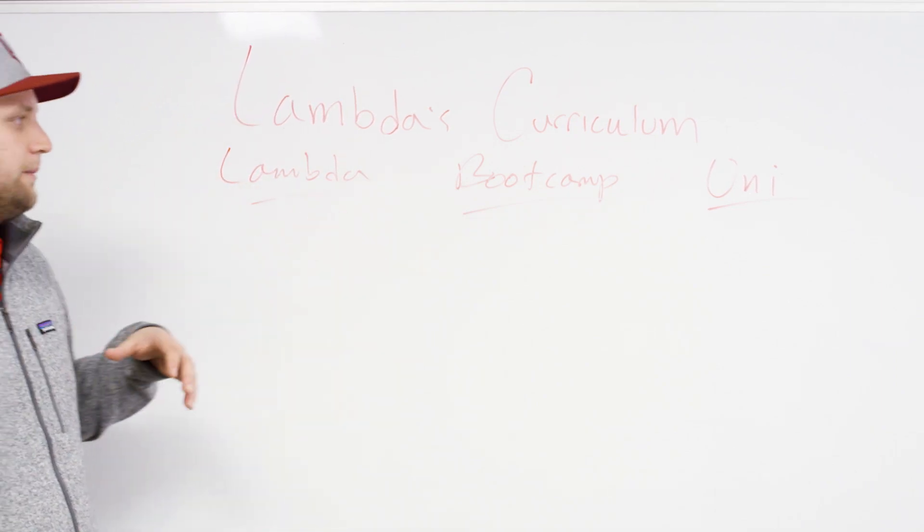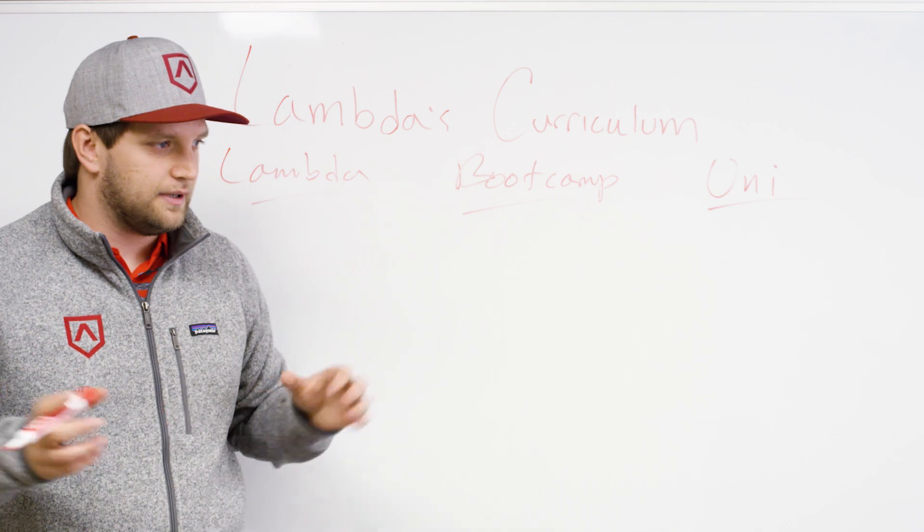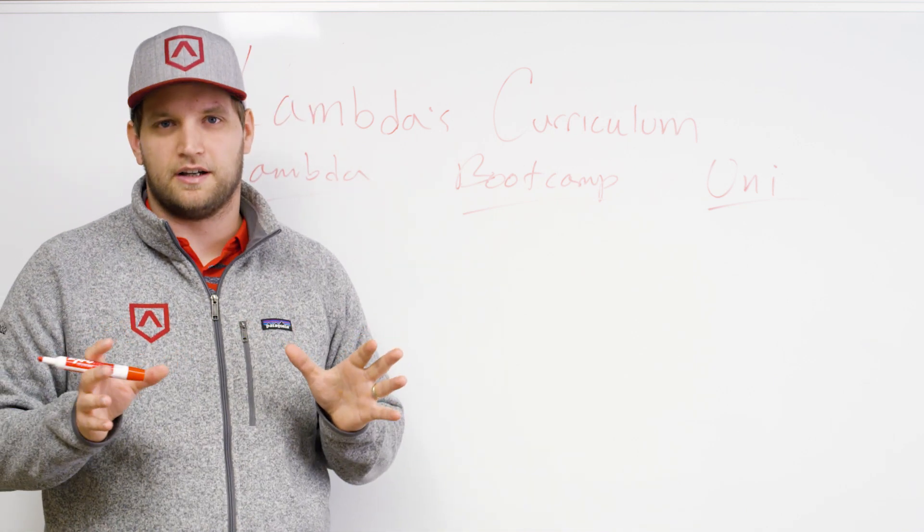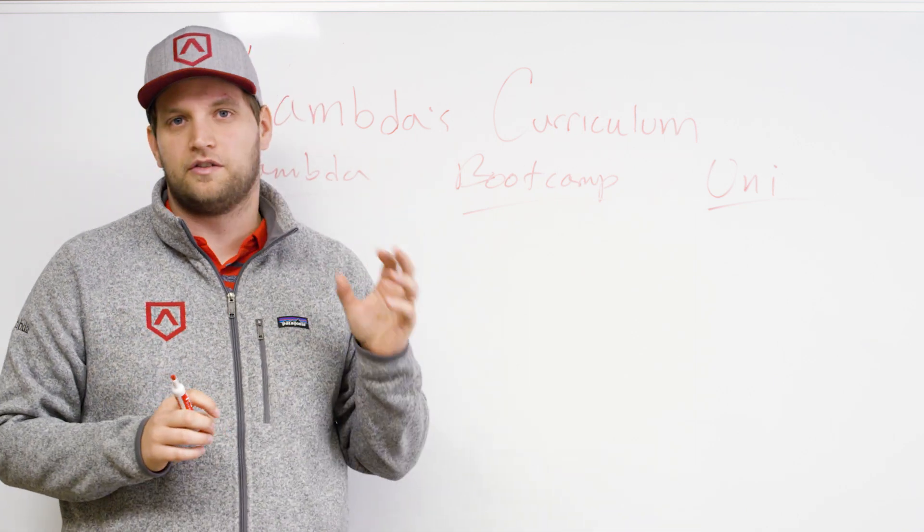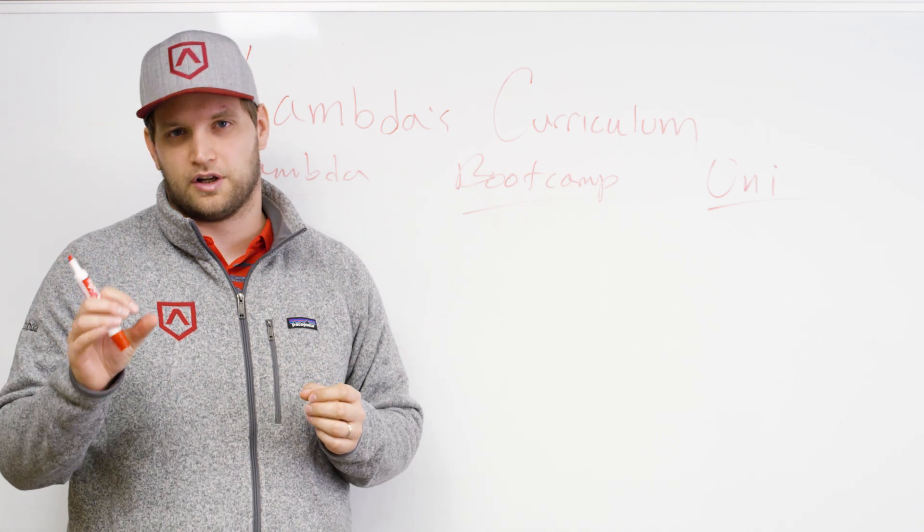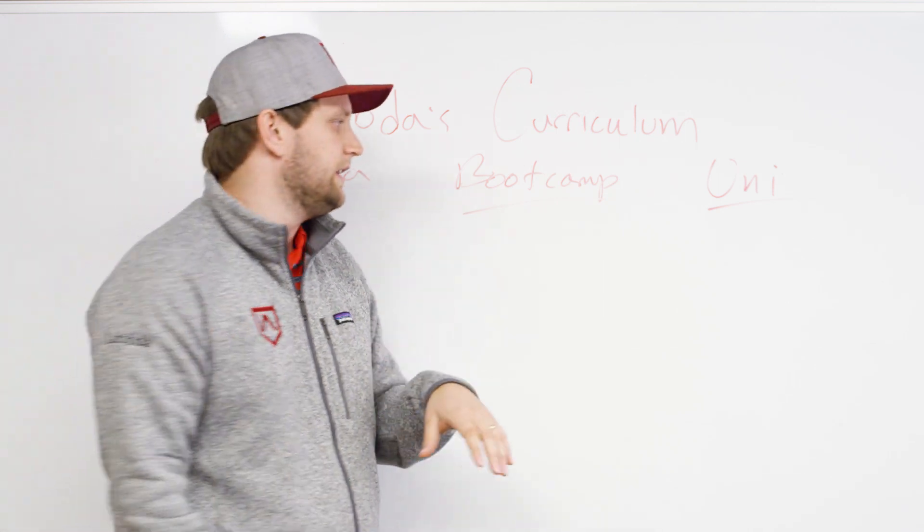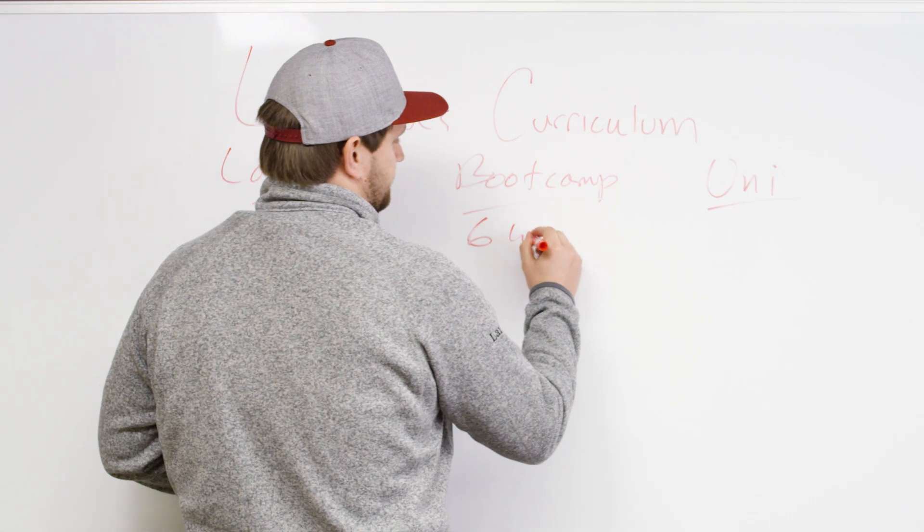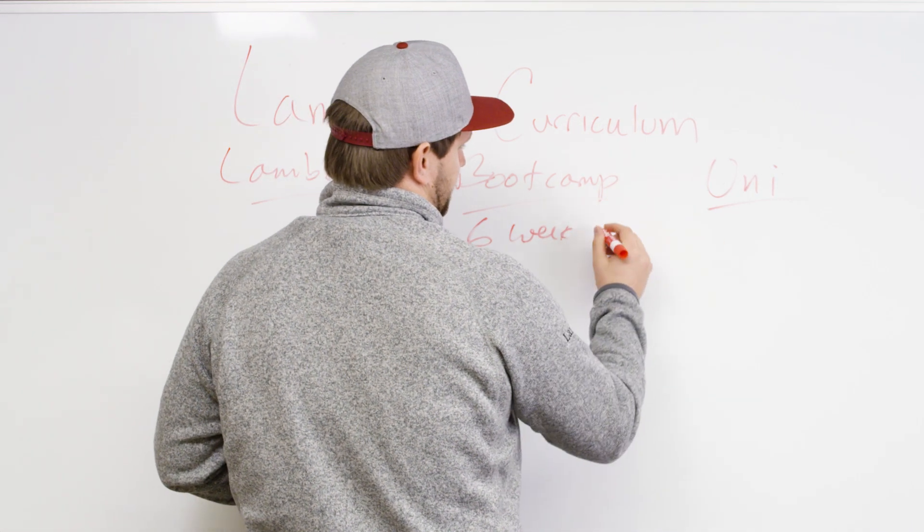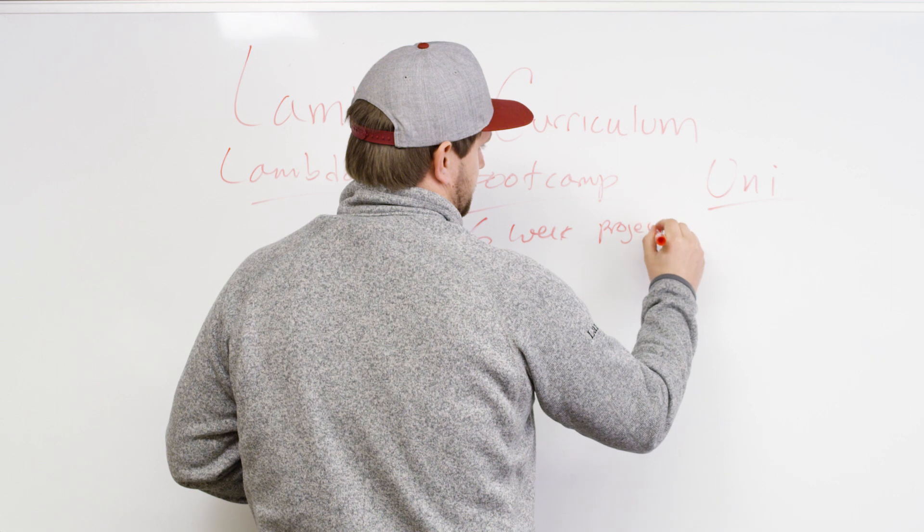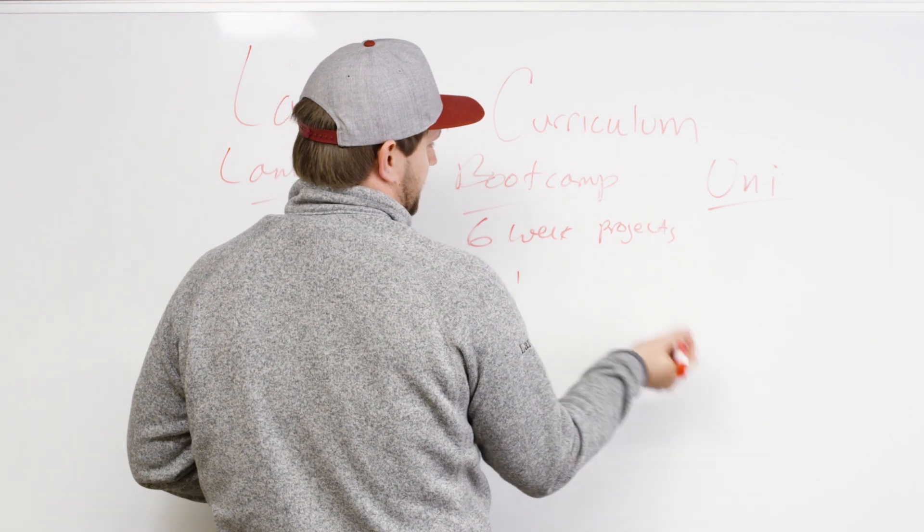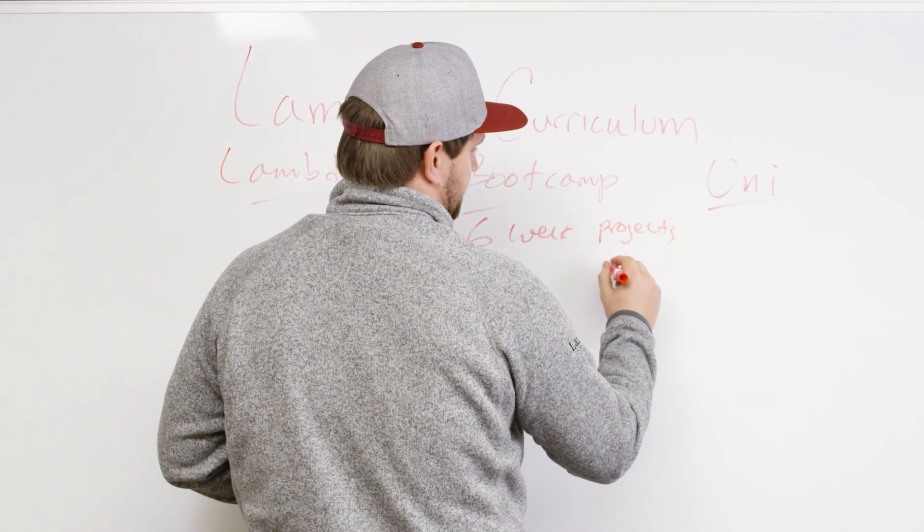I'll start with the coding boot camp. Most of them are three months long. Typically, you have about six weeks of instruction and then six weeks of working on a project. So 12 weeks total: six weeks of instruction, six weeks of projects.